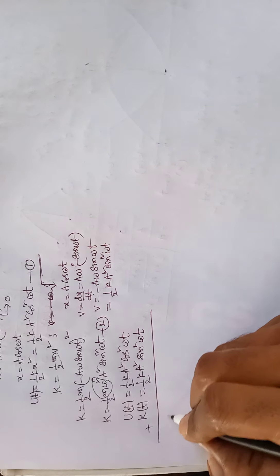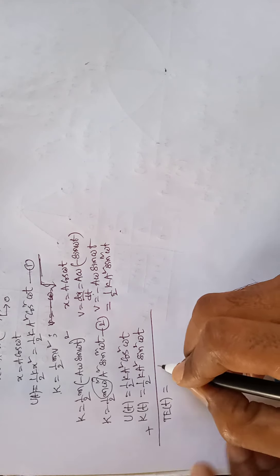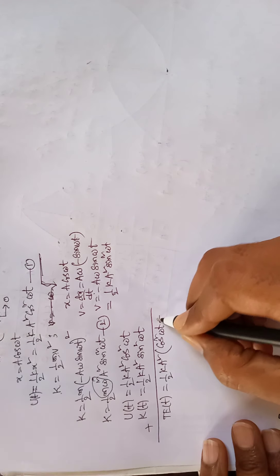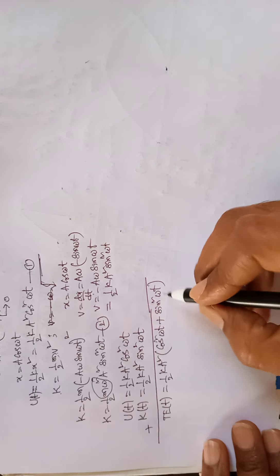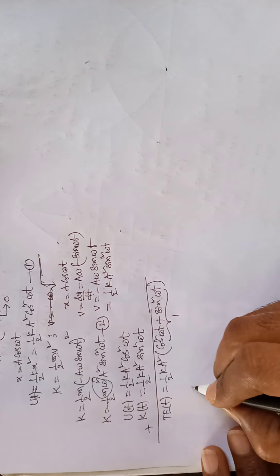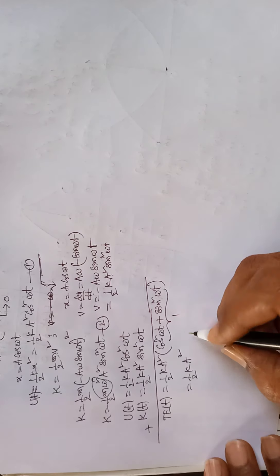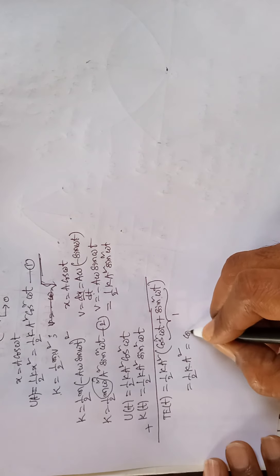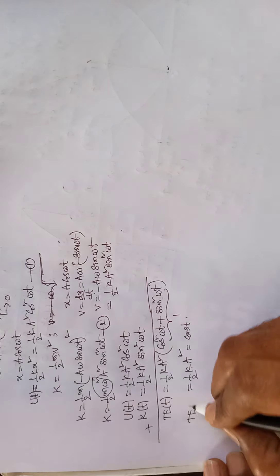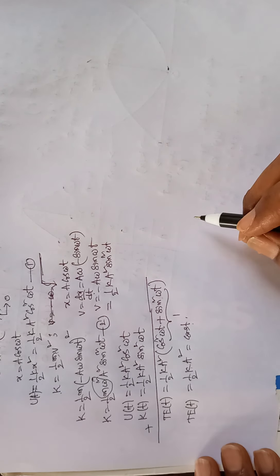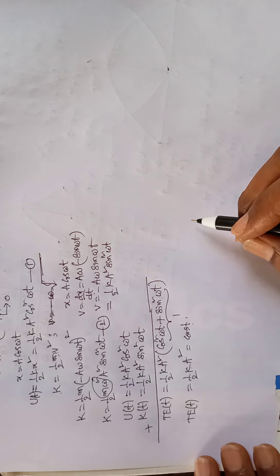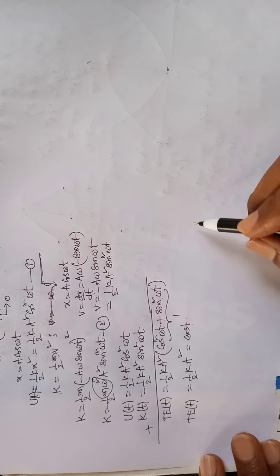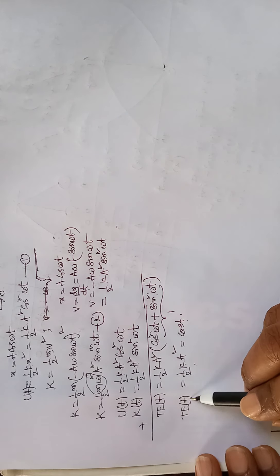So potential energy is ½kA² cos²(ωt) and kinetic energy is ½kA² sin²(ωt). Adding these two gives total energy. The common factor is ½kA², and we have cos²(ωt) + sin²(ωt). Since sin²θ + cos²θ = 1, we get total energy = ½kA². Since k and a are constants, the total energy is a constant at any time — previously we proved it for any position, and now we proved it for any time.